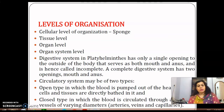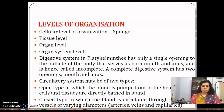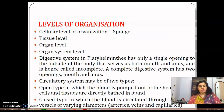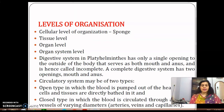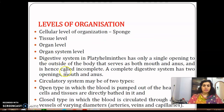Circulatory systems can be of two types: open type and closed type. In the open type circulatory system, there are no blood vessels — blood is not confined to vessels. In the closed type circulatory system, blood circulates through a series of vessels of different diameters — arteries, veins, and capillaries. In a closed system, cells, tissues, and organs are not directly bathed in blood.